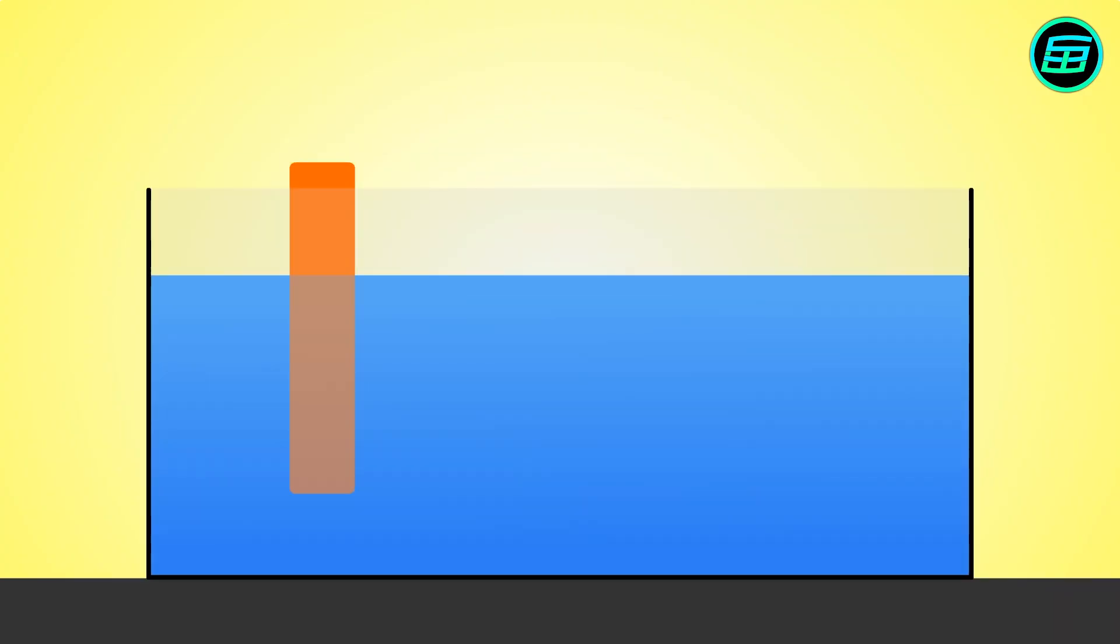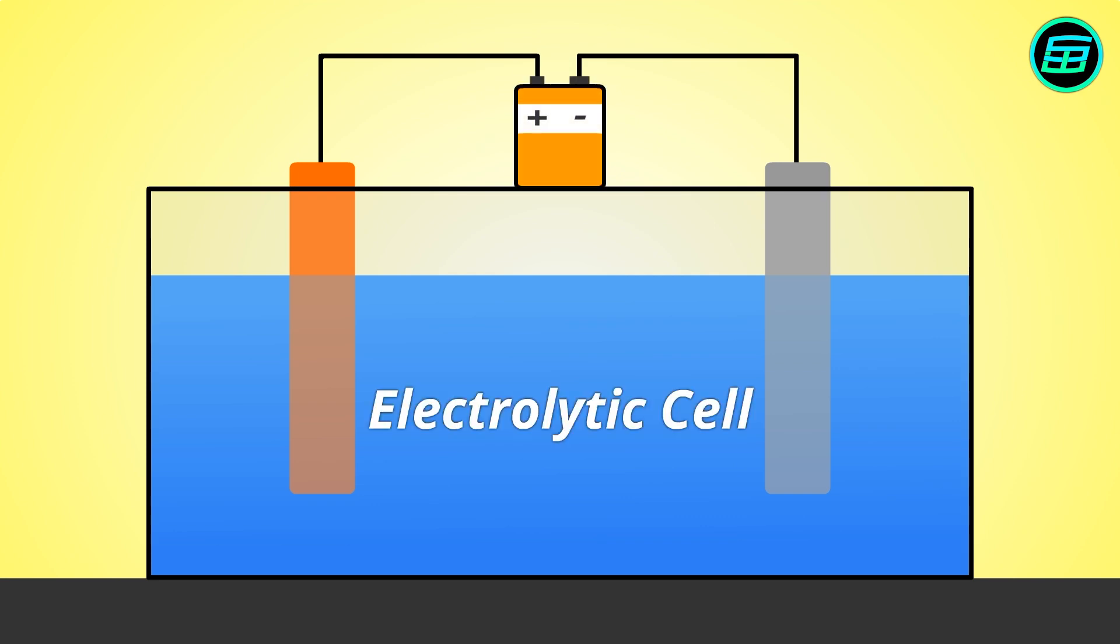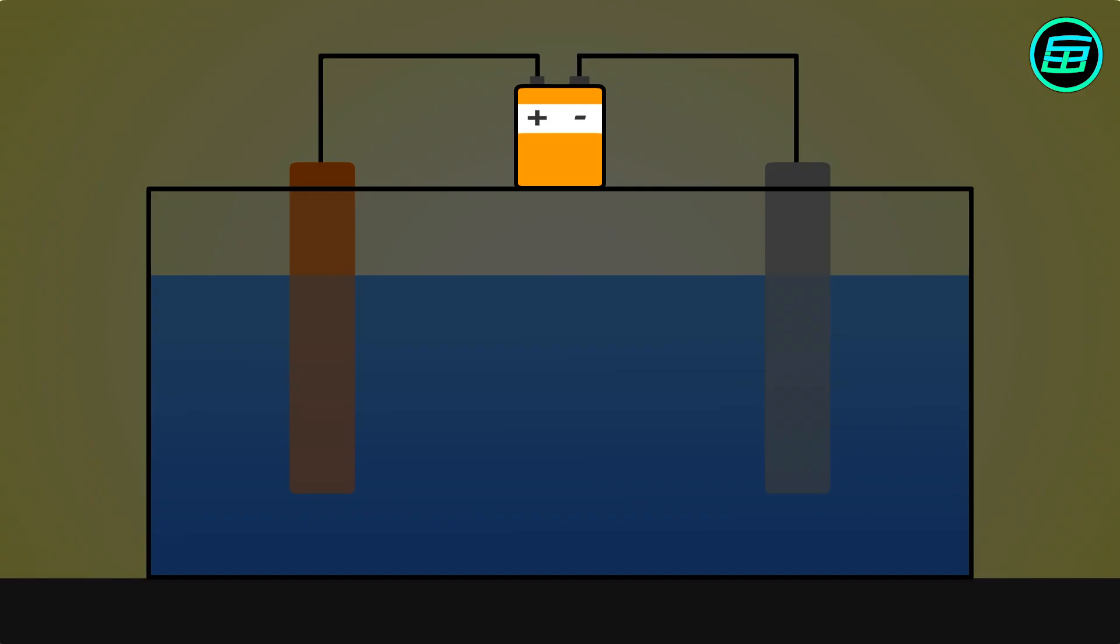Electroplating is carried out with a special device called an electrolytic cell. An electrolytic cell consists of a DC battery, electrodes, and an electrolytic solution.